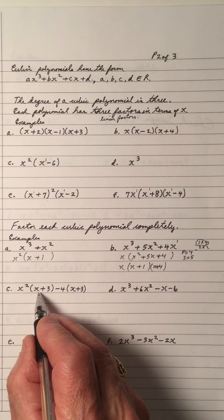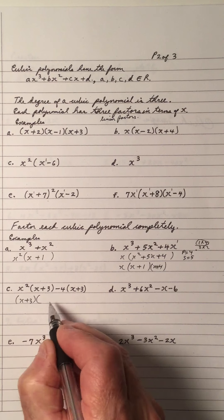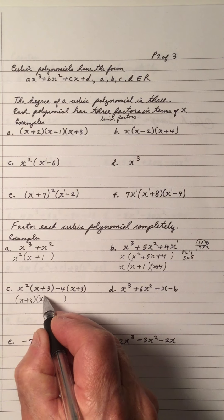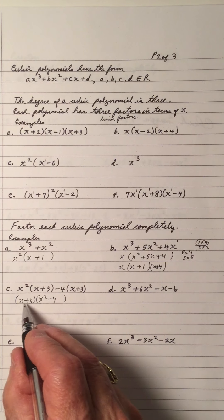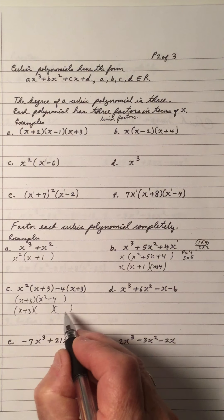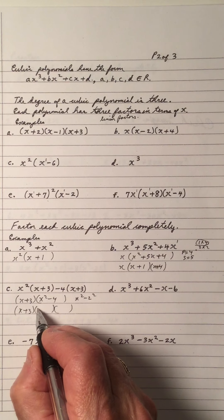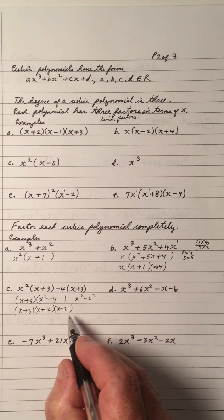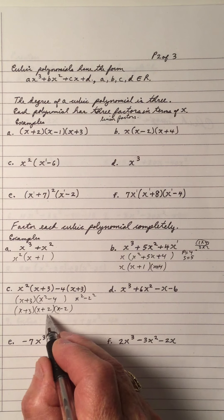In example C, I see a binomial GCF. x plus 3 is being taken out. If you take x plus 3 out of the first expression, you get x squared. If you take x plus 3 out of the second expression, you get minus 4. That's a special quadratic — notice we have x squared minus 2 squared. We call that the difference of two squares. So it's x and x, 2 and 2, with a plus and a minus. There's no x in the middle, so the sum is 0: plus 2 minus 2 equals 0.